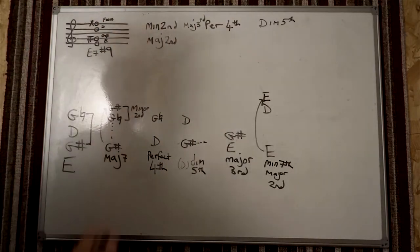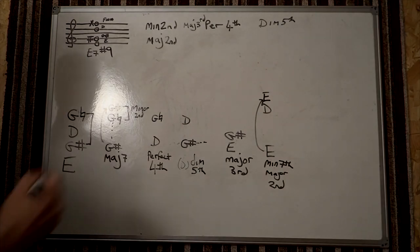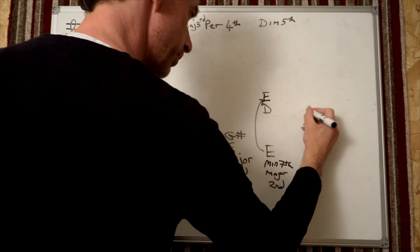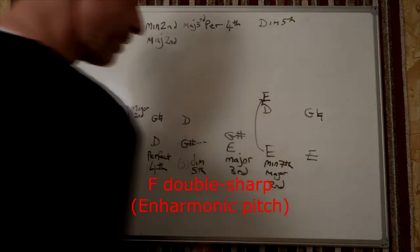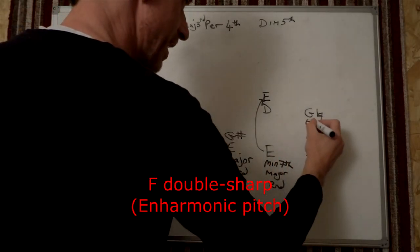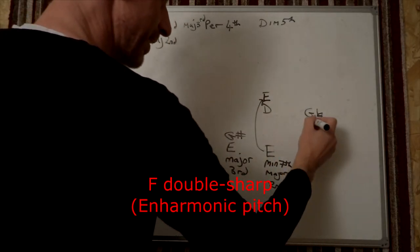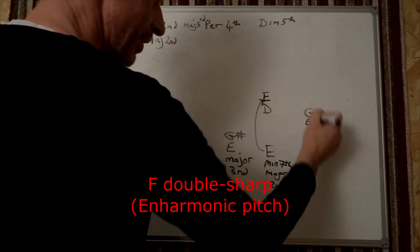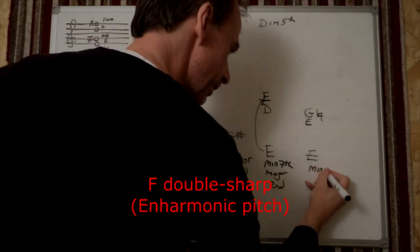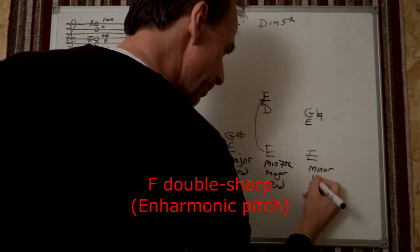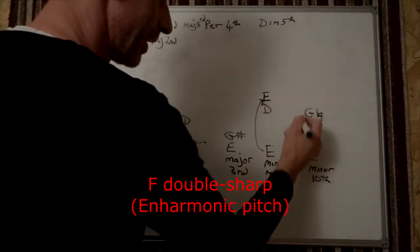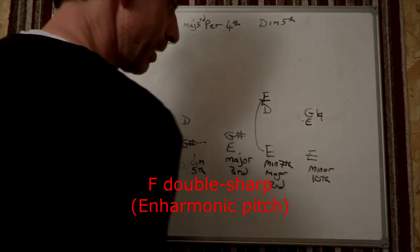We're just looking for a minor third now. That E to the G-natural, which really is the F-double-sharp. If you imagine that there's an E up the octave, so that's the eighth note, this really is, if we're being pedantic, a minor tenth, which is the same as a minor third.